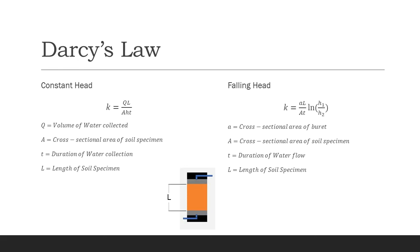Before starting the test, it is important to saturate the soil specimen by running at least 200 ml of water through the permeameter, filling the cell with water and expelling any air inside the cell. Doing this will increase the flow rate of the test.